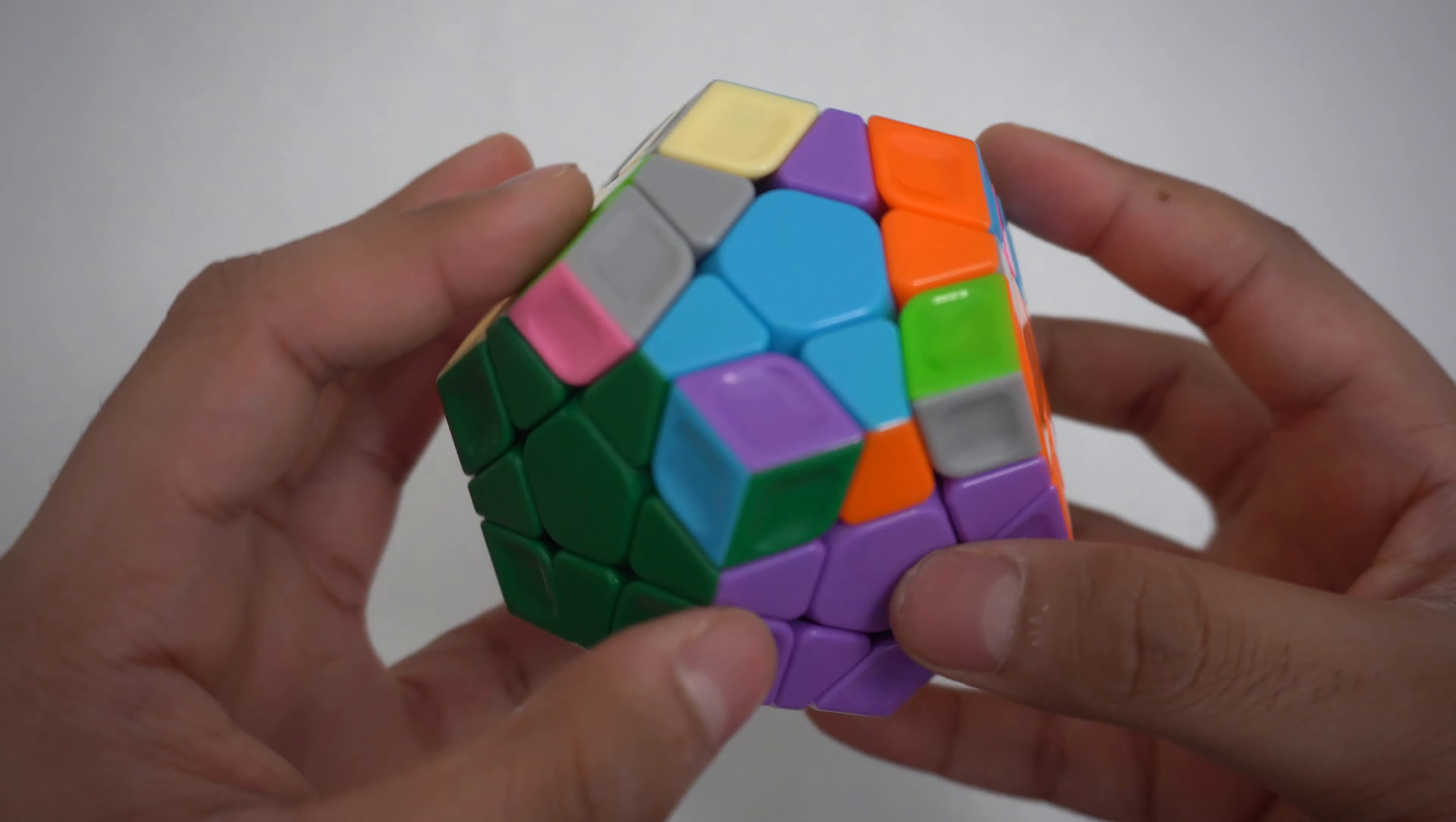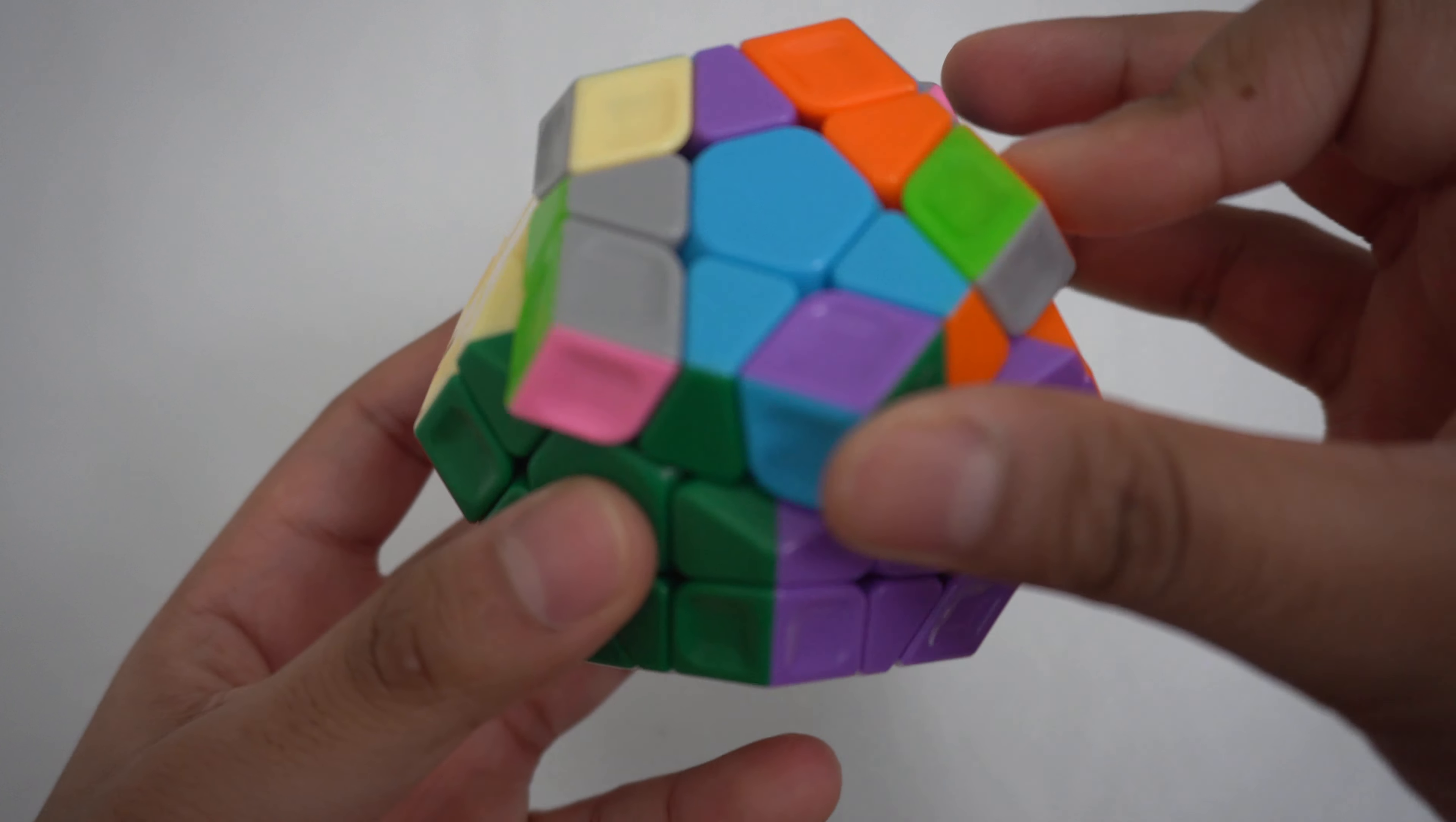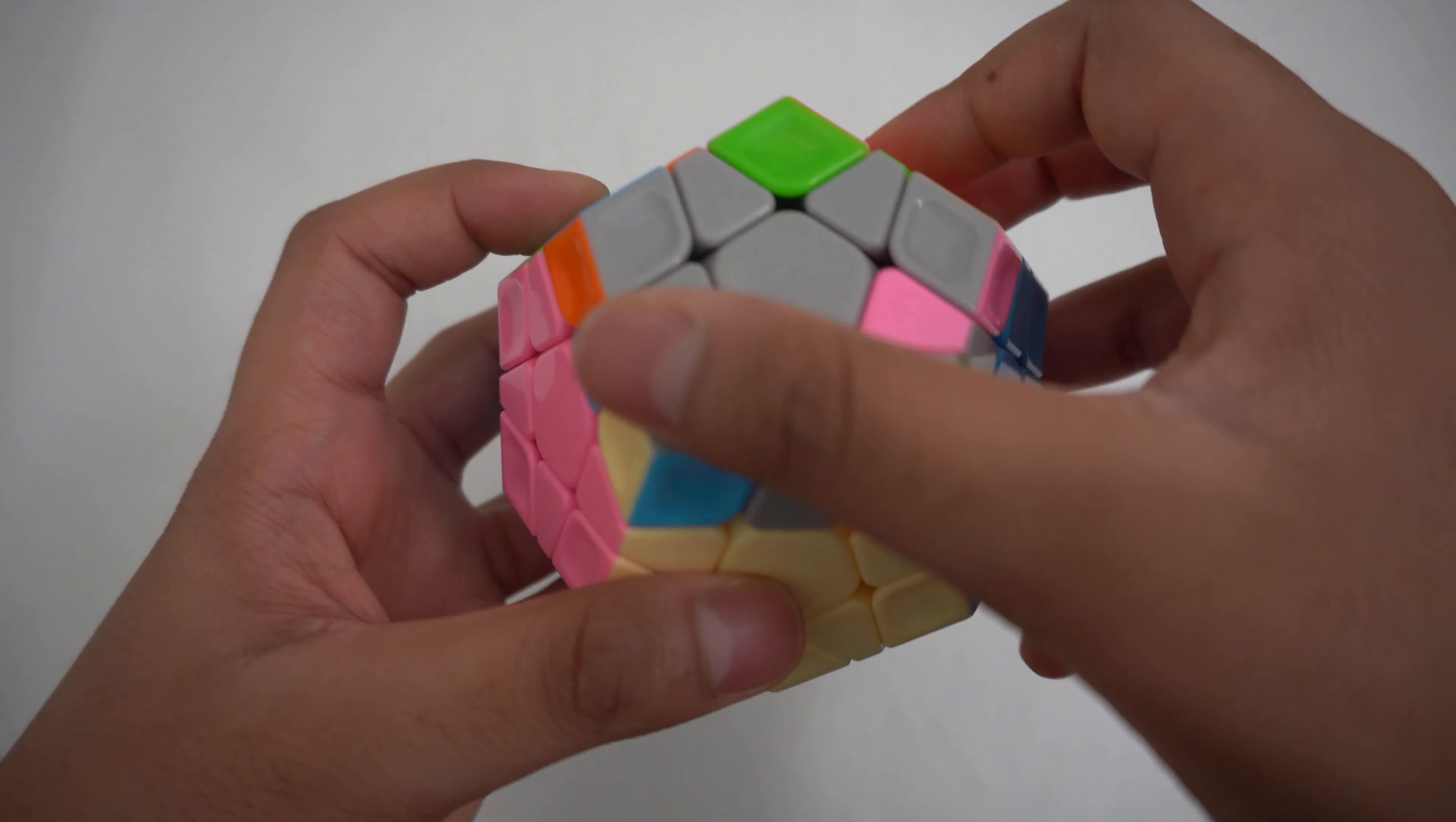For that problem, all you have to do is move the green edge piece to purple. This allows you to make the pair and insert it. After you make the pair, all you have to do is put the green edge piece back. Then, you should have two more F2L slots to do.